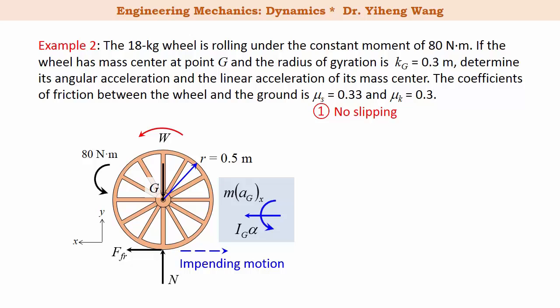We can draw a simplified version of the kinetic diagram, recognizing that there is no motion along the vertical direction. Now we are ready to write our equations of motion. Resultant force along the x direction — there is only one force along the x direction, which is the frictional force, and that equals to the mass of the wheel times the linear acceleration of its gravitational center along the x direction, AGx.